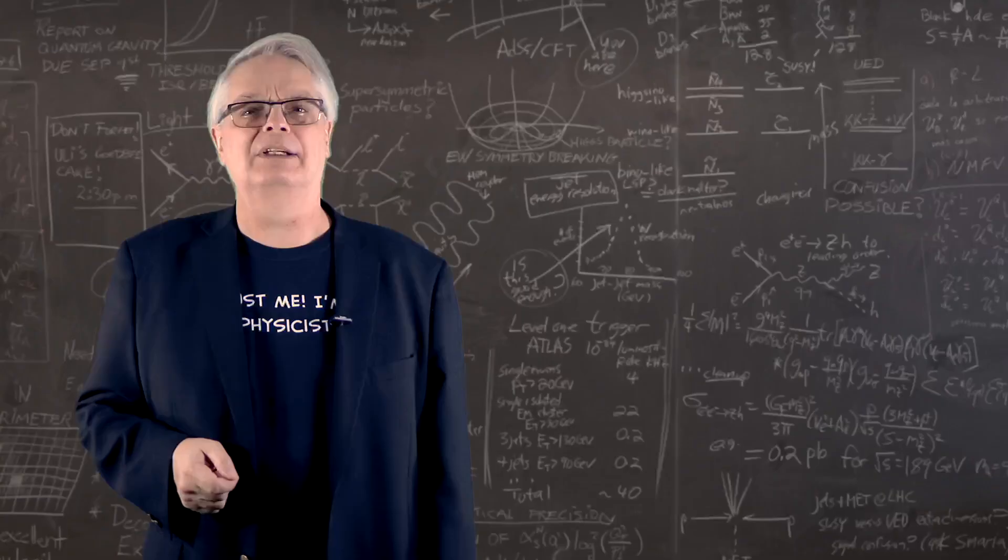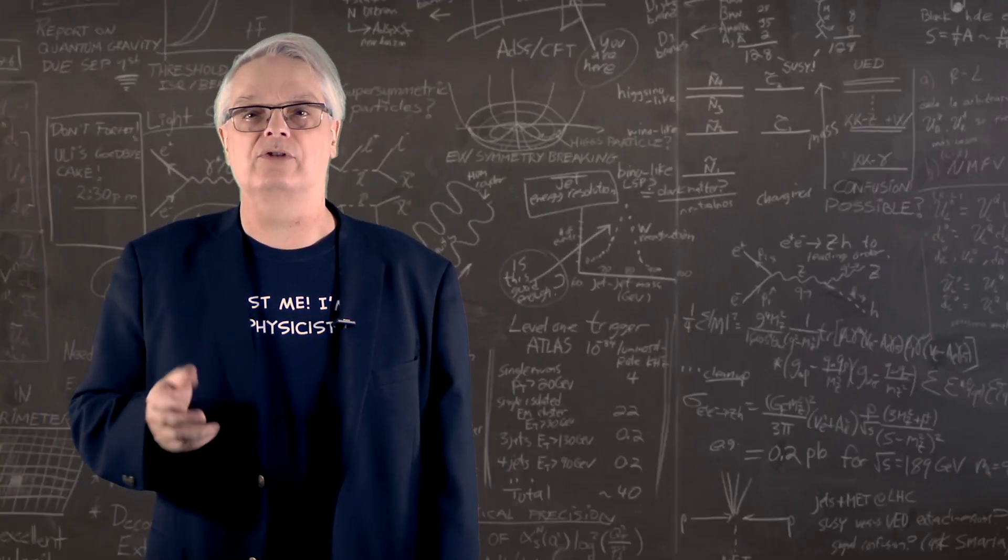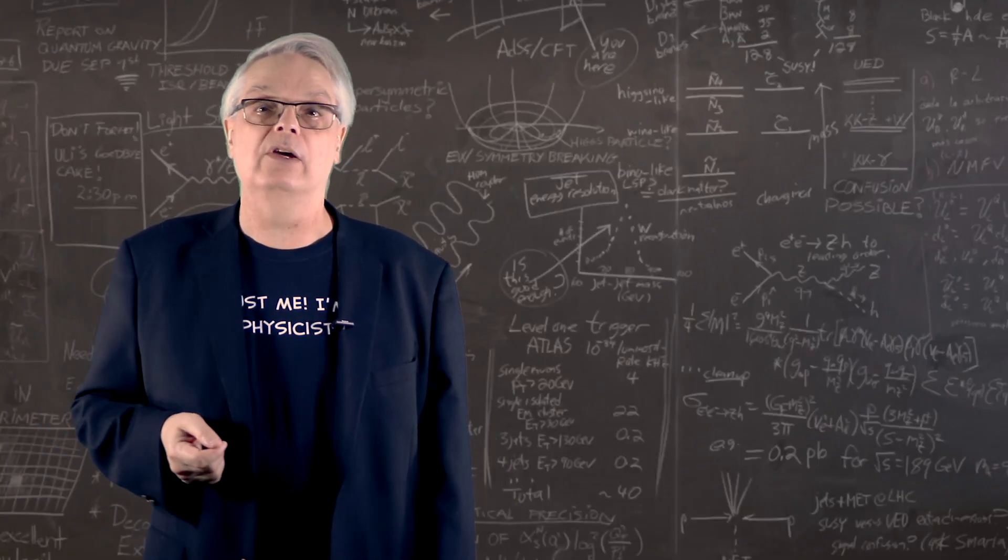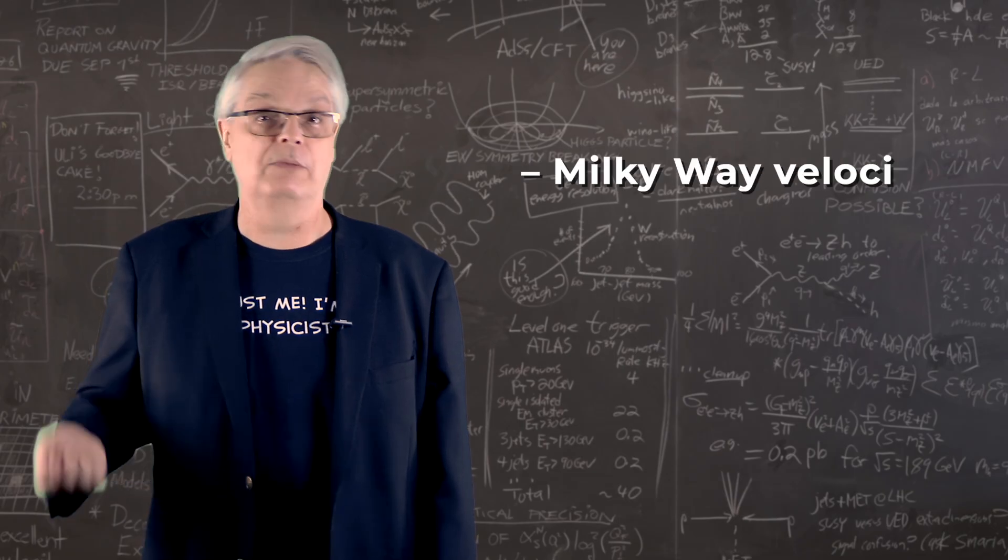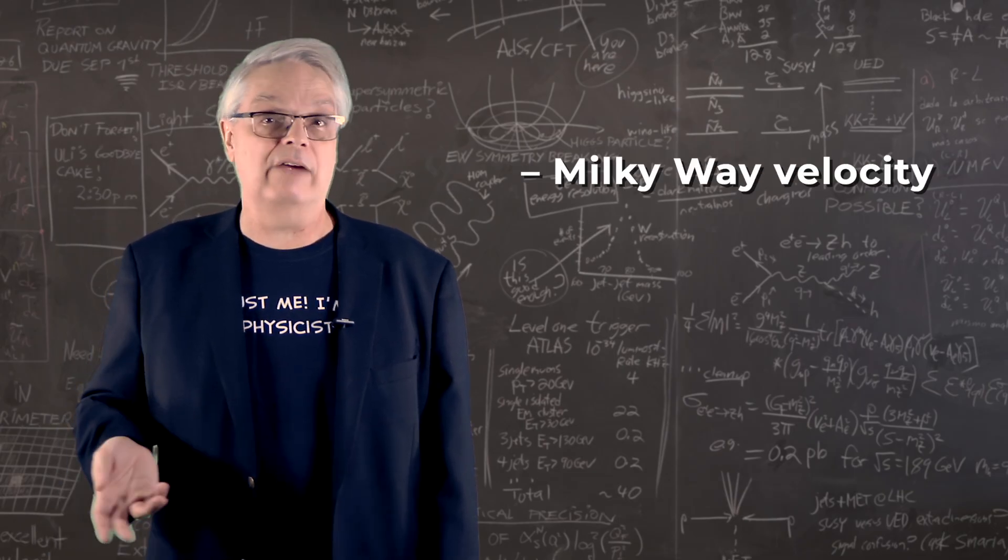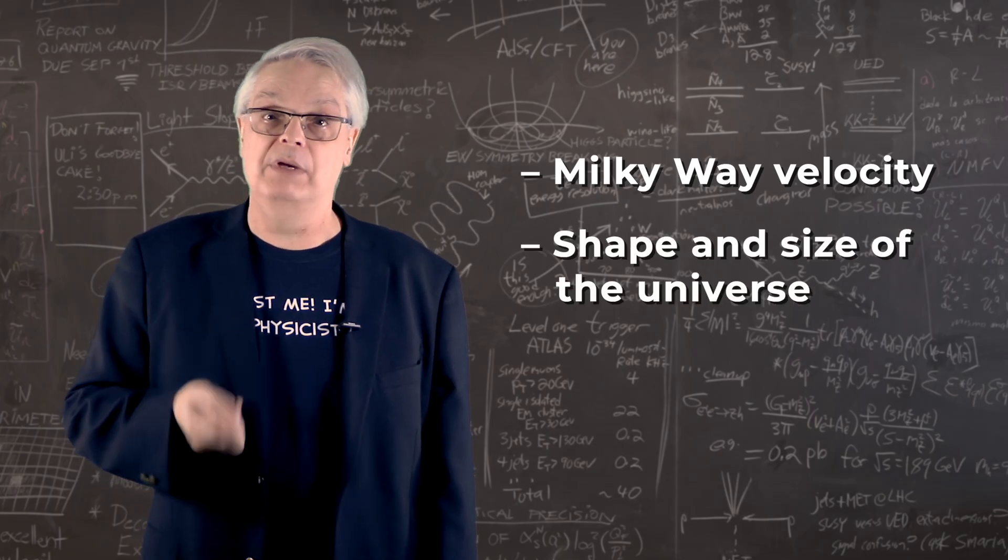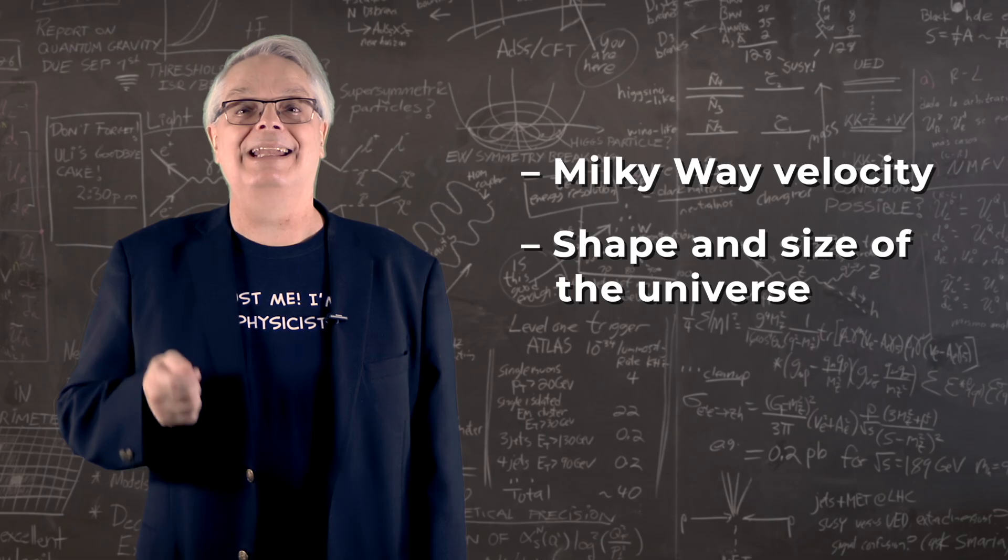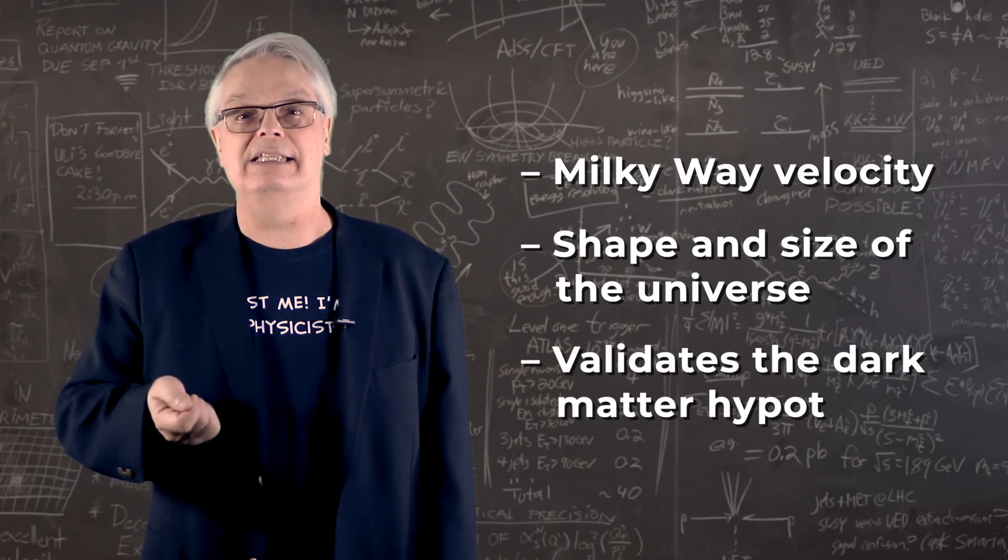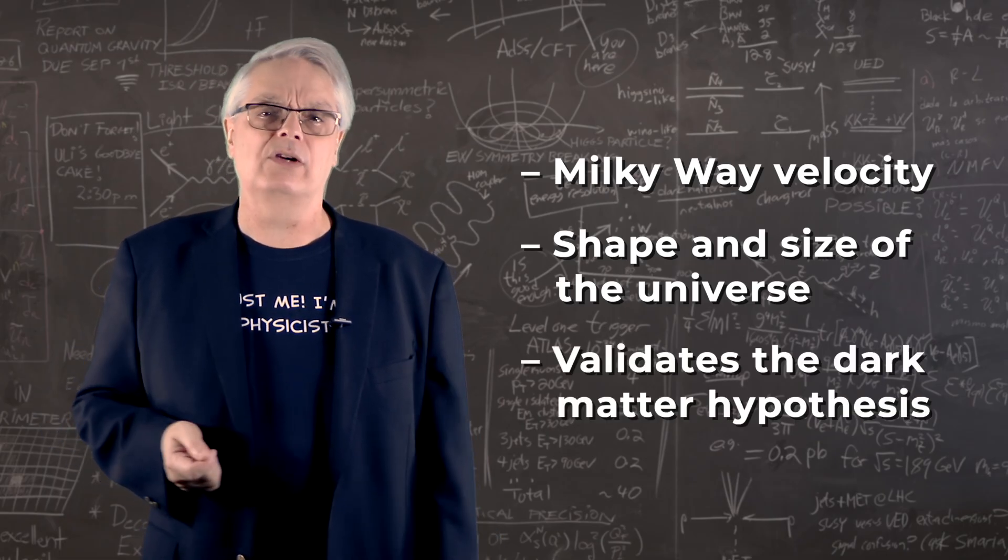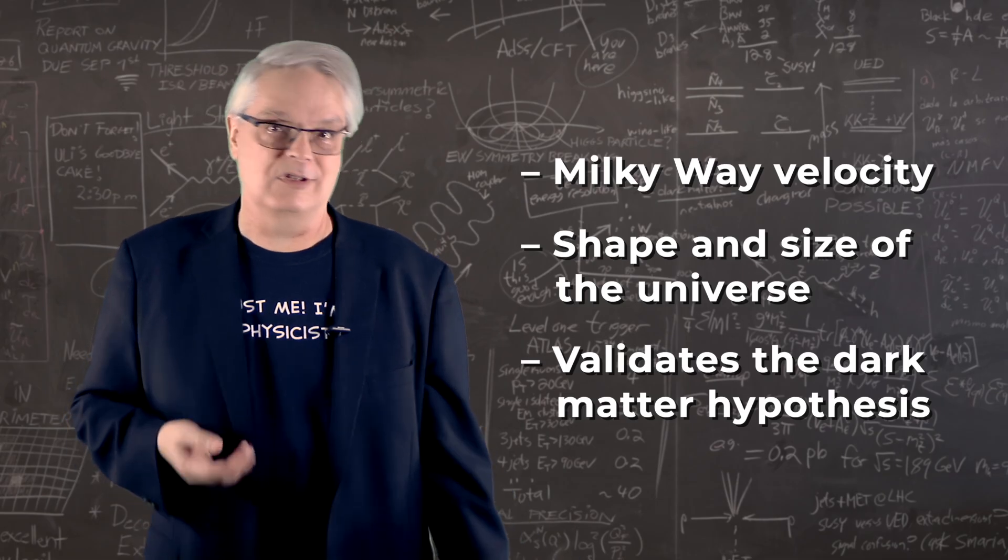The CMB has been a pretty incredible tool to help us understand the universe. In this video, I've told you that it tells us how fast the Milky Way is moving compared to the average of the rest of the universe. I've explained how it tells of the most probable shape and minimum size of the cosmos. And it also strongly validates the existence of dark matter. And those aren't the only things. The whole thing is just extraordinary.